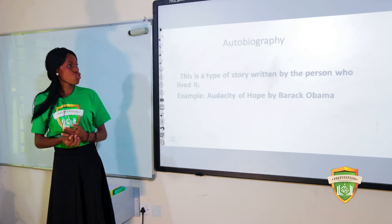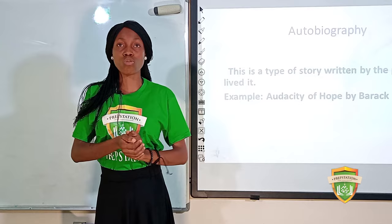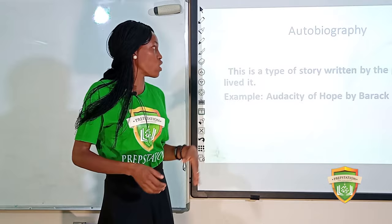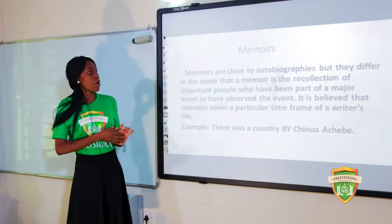An autobiography is the type of story written by the person who lived it. A typical example is Audacity of Hope by Barack Obama — Obama sat down and wrote his own story himself, though editors may have assisted.